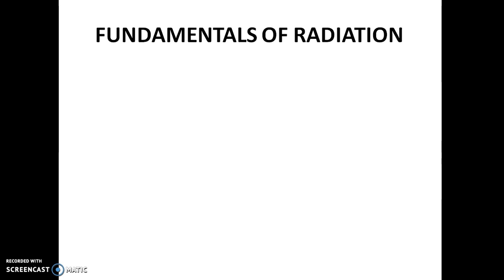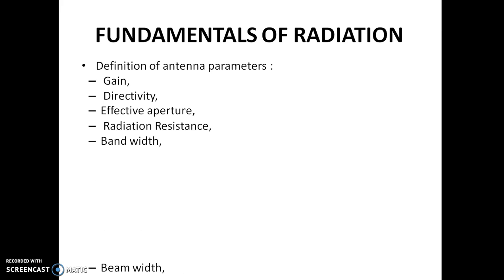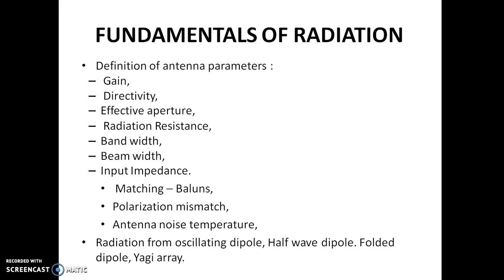Now in order to understand the operation of antenna, first we have to understand some parameters and fundamentals related to antenna and radiation. These parameters are gain, directivity, effective aperture, radiation resistance, bandwidth, beam width, input impedance and some more as shown on the slide.